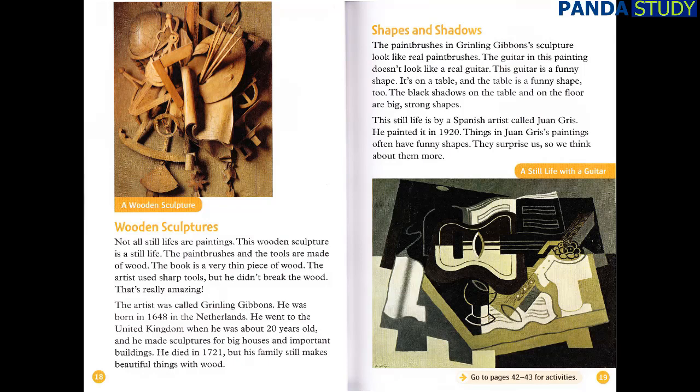The paintbrushes in Grinling Gibbons' sculpture look like real paintbrushes. The guitar in this painting doesn't look like a real guitar — it's a funny shape, it's on a table, and the table is a funny shape too. The black shadows on the table and on the floor are big, strong shapes. This still life is by a Spanish artist called Juan Gris, painted in 1920. Things in Juan Gris's paintings often have funny shapes — they surprise us, so we think about them more.